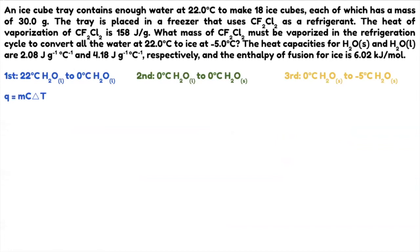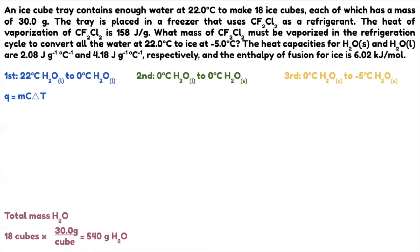To get the mass: it says make 18 cubes, each with a mass of 30 grams, so 18 times 30 gives 540 grams of H₂O — that's the total mass. We'll also need moles: 540 grams times 1 mole over 18.02 grams of H₂O — cancel the grams — gives 30 moles of water.